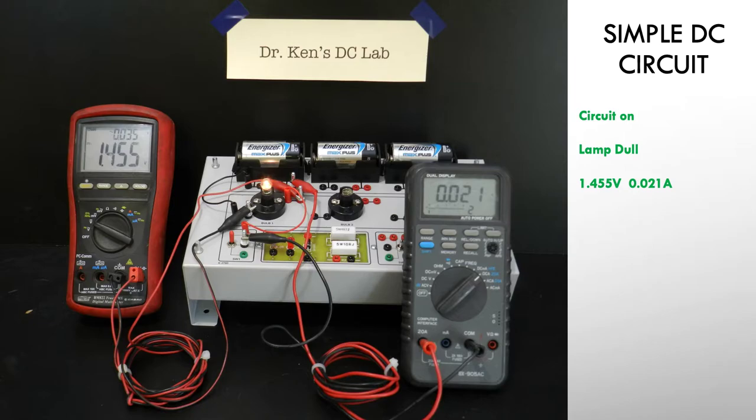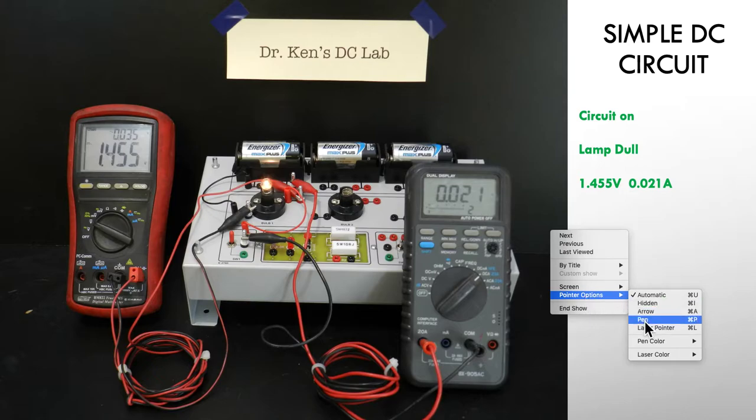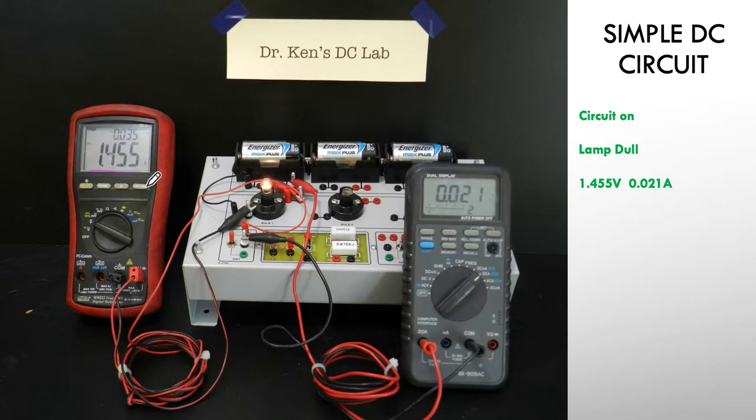So here we are. We've turned our circuit on and you can see the lamp has turned on and is glowing. We're pulling 1.455 volts and about 0.021 amps or 21 milliamps. So in this particular case the circuit is on, the lamp is reasonably dull compared to what it's capable of. I've just noted what our voltage and our current is doing on the side there. So by turning the circuit on with one battery, we're going to get this dull glowing lamp with the appropriate voltages and currents being measured.